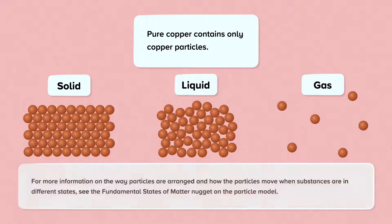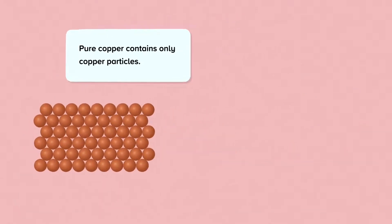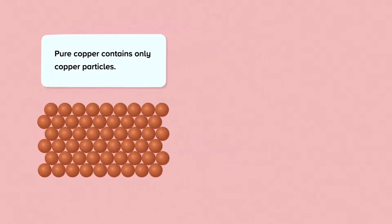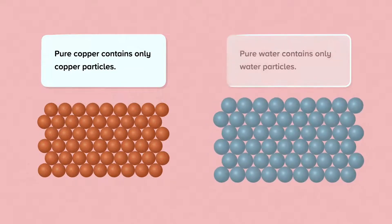For more information on the way particles are arranged and how the particles move when substances are in different states, see the fundamental states of matter nuggets that look at the particle model. Different substances contain different particles, so while pure copper contains only copper particles, pure water contains only water particles.